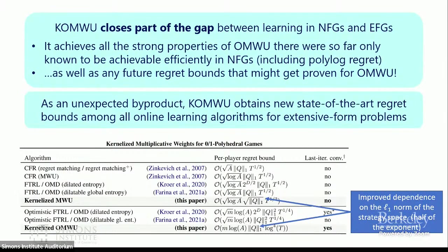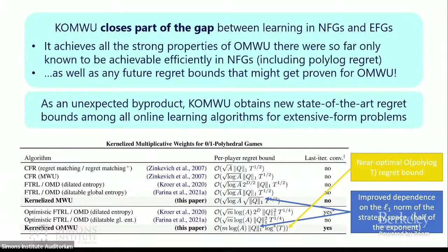In particular, looking at the dependence on the L1 diameter of the strategy space, we have a square root improvement on the exponent. If previously the exponent was one, now we have a square root; if it was two, now it's one. We also have near-optimal polylogarithmic regret bounds inherited from Daskalakis, Farina, and Schmucker's analysis. It's an open question whether the separation between non-optimistic and optimistic methods — where optimism requires a bigger cost in terms of the size dependence — is tight.